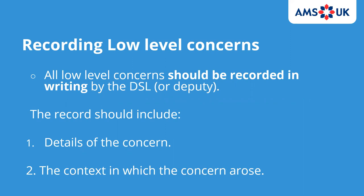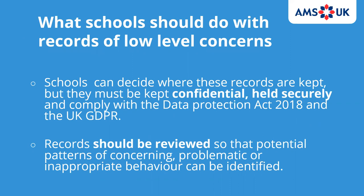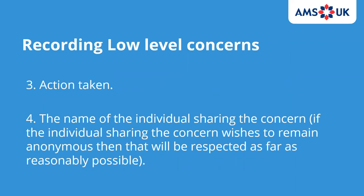All low-level concerns should be recorded in writing by the DSL or the deputy. Records should include details of the concern, the context in which it arose, action taken, and the name of the individual sharing the concern. If the individual wishes to remain anonymous, that should be respected as reasonably possible. Leaders should also include this in their safeguarding policy under the DSL's job description, as this is new to their role — and the DSL should be clear that recording low-level concerns is part of their responsibility.